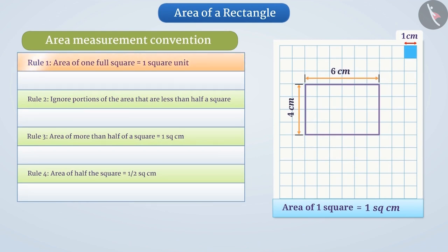Rule 1: The area of one full square is taken as 1 square unit. In the given figure, the unit distance is 1 cm. Therefore, the area of one full square will be 1 cm².